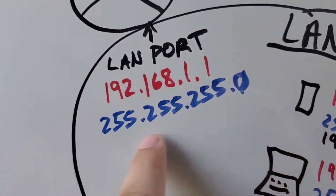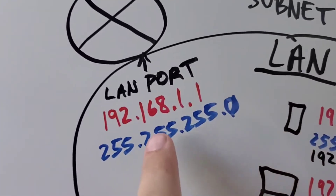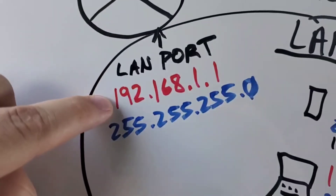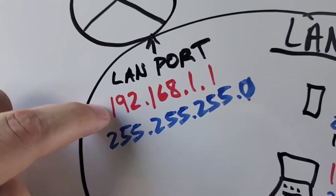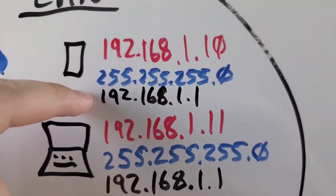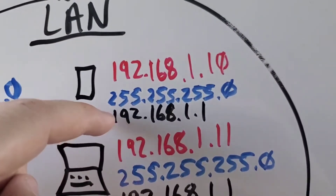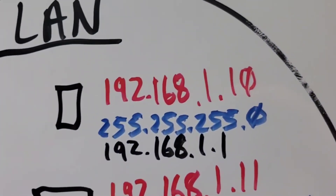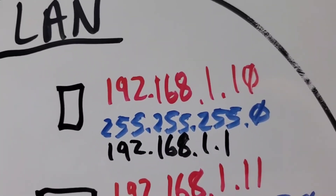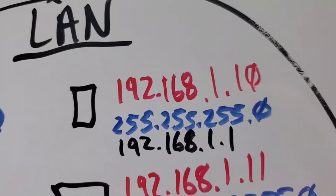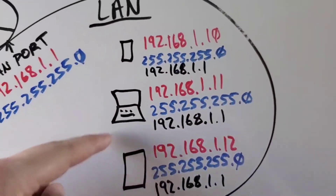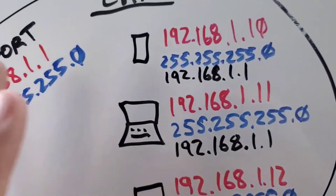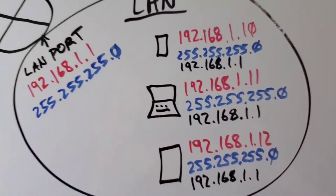You would take that subnet mask, just like it is in the router, and copy it exactly to your device. Then you go back to the router and note that you don't want your new device's IP to be the same as the router's 192.168.1.1. So if you're configuring another device, you put the router address as the default gateway, copy the exact same subnet mask from the router, and choose an IP that's not the same as the router — it could be 192.168.1.2, or 192.168.1.254, or anything in between, as long as it's not taken. If you make two devices the same IP address, they're going to have problems communicating on the network — that's called an IP address conflict, and it's going to cause serious problems.